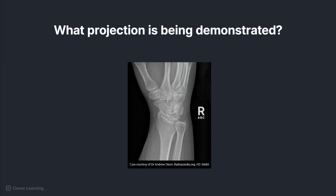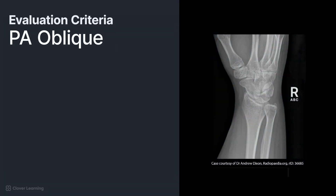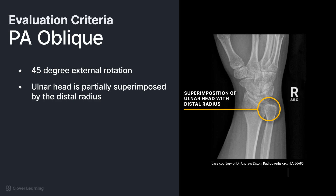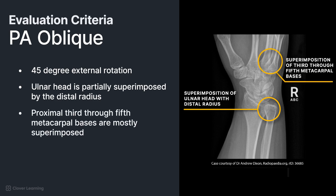What projection is demonstrated in this image? Which direction was it rotated? This is a PA oblique projection of the wrist with 45 degrees of lateral rotation. It is external or lateral rotation because it is being rotated away from the median plane of the body. We know it is a true 45-degree oblique because the ulnar head is partially superimposed by the distal radius, and the proximal third through fifth metacarpal bases are mostly superimposed.